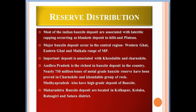Regarding reserve distributions, most Indian bauxite deposits are associated with lateritic capping, occurring as blanket deposits in the hills and plateaus. Major bauxite deposits occur in the central region, Western Ghats, Eastern Ghats, and Maikal range of Madhya Pradesh. Important deposits are associated with charnockite and khondalite. Andhra Pradesh is the richest in bauxite deposits in the country — nearly 750 million tons of metal-grade bauxite have been proved in charnockite and the khondalite group of rocks.